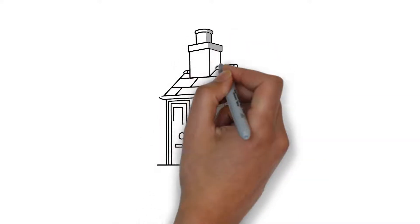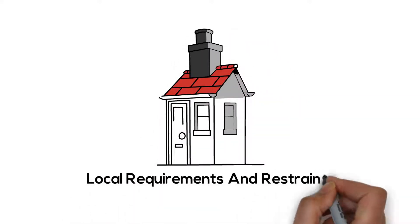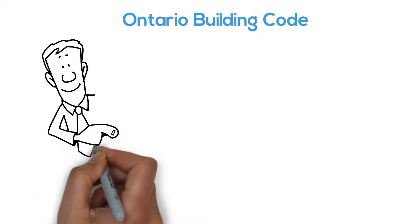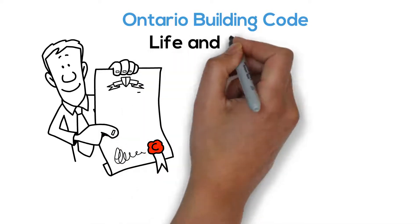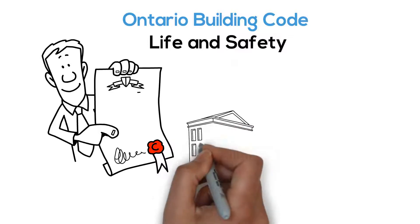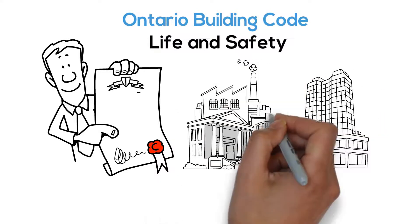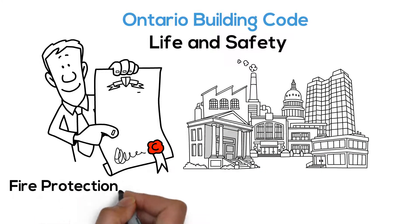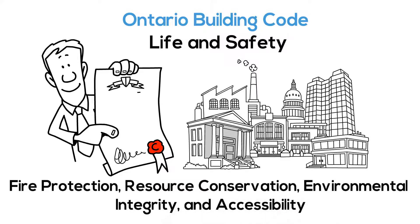A difficult aspect of designing a building is adhering to local requirements and restraints. The Ontario Building Code is the guiding document to protect residents and neighbors of the building. A central focus of this regulation is life and safety. The code establishes requirements and minimum standards to protect public health and safety, fire protection, resource conservation, environmental integrity, and accessibility.